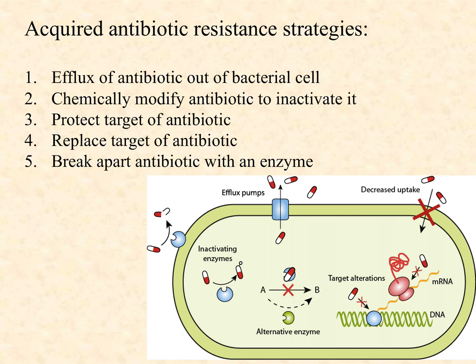To recap, the first four strategies are efflux, modification, target protection, and target replacement — and the fifth is breaking apart the antibiotic with an enzyme. The target of the beta-lactam drugs is the peptidoglycan, so these beta-lactamases are often found associated with the peptidoglycan. In gram-positives, they may be affiliated with the thick peptidoglycan wall; in gram-negatives, they're almost always found inside the periplasm between the two membranes where the peptidoglycan is located.